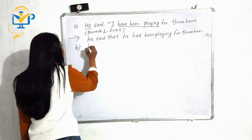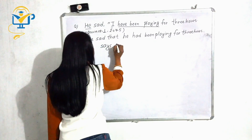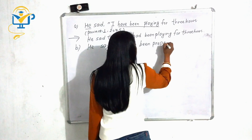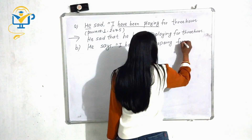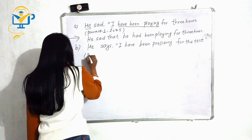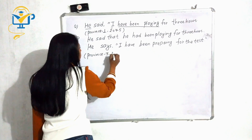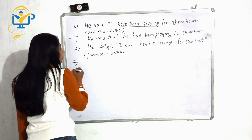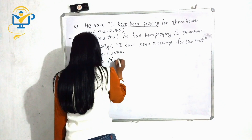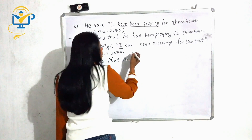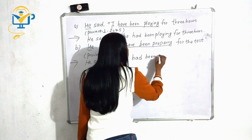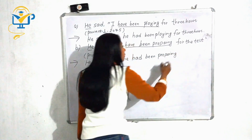Next question. He says, 'I have been preparing for the test.' Similarly, this is also an assertive sentence. He says that — I is first person, changes according to the subject. He is the subject. Has been plus past participle changes into had been plus past participle. Answer: He said that he had been preparing for the test.